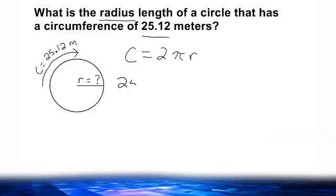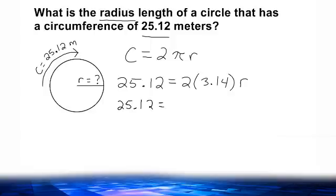Next, we plug in all the values that we know into our equation. It is given in the problem that the circumference is 25.12 meters, so we substitute C with 25.12. We just bring the 2 down in our equation. Next we substitute π with 3.14. Next we simplify our equation by multiplying 2 by 3.14, which gives us 25.12 = 6.28 times the radius.